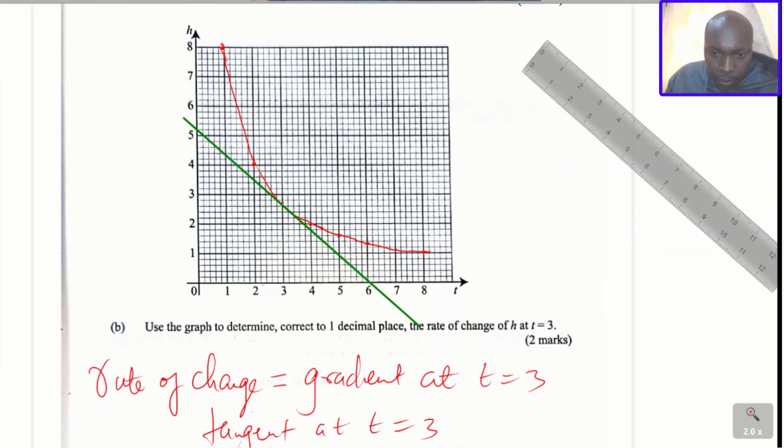Now after doing that, since to get the rate of change at t is equals to 3, we shall get the gradient. And to get the gradient at that point, this is what we're going to do. We shall just get two points on that line, and that will give us the rate of change. The first point is automatically when t is equals to 3.